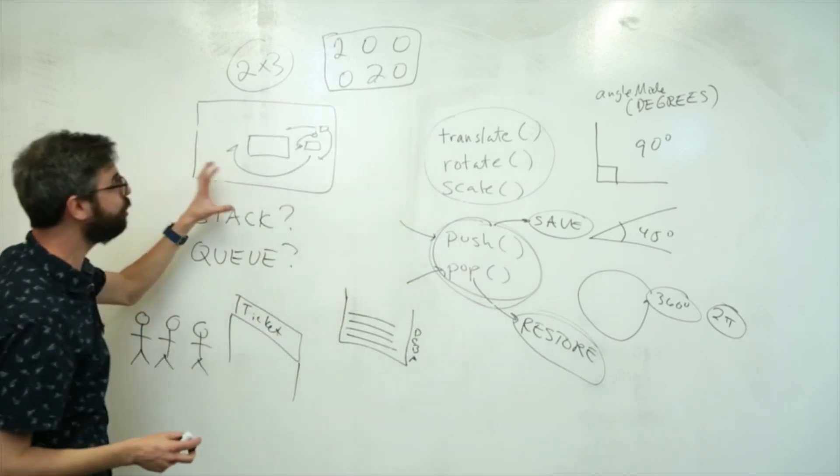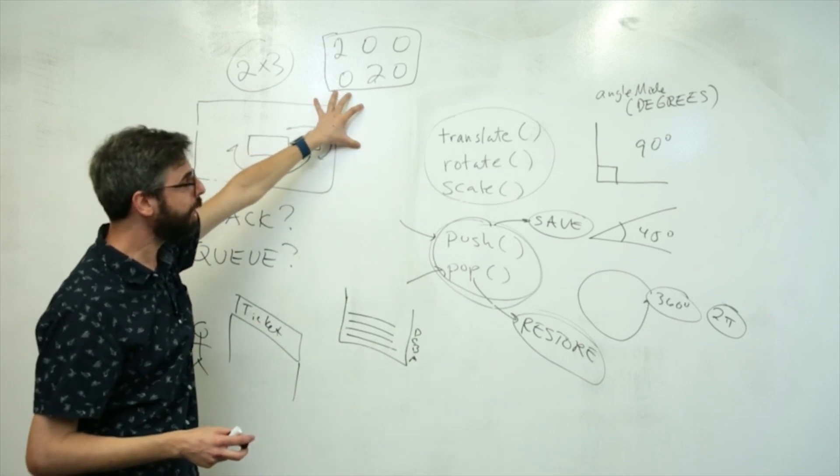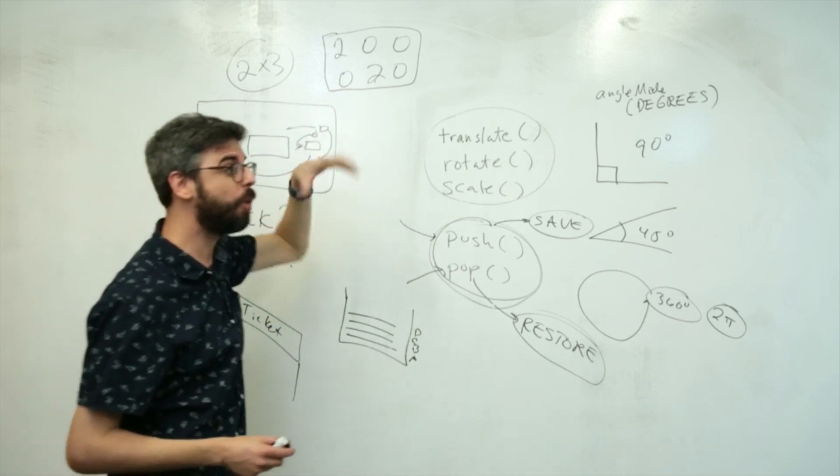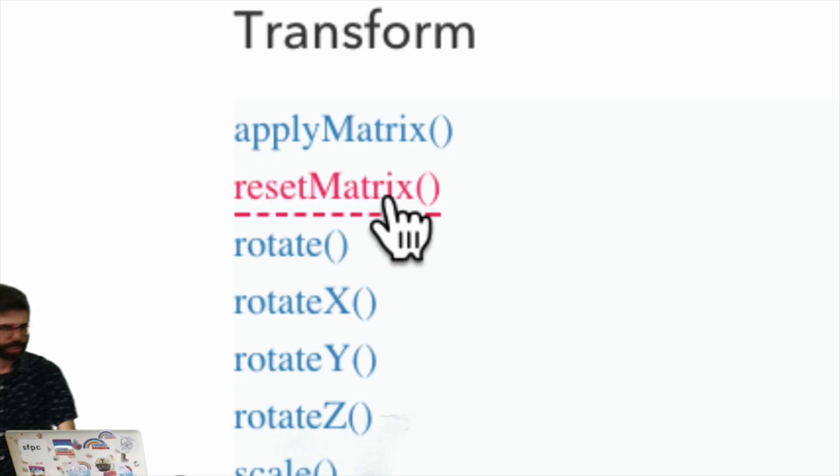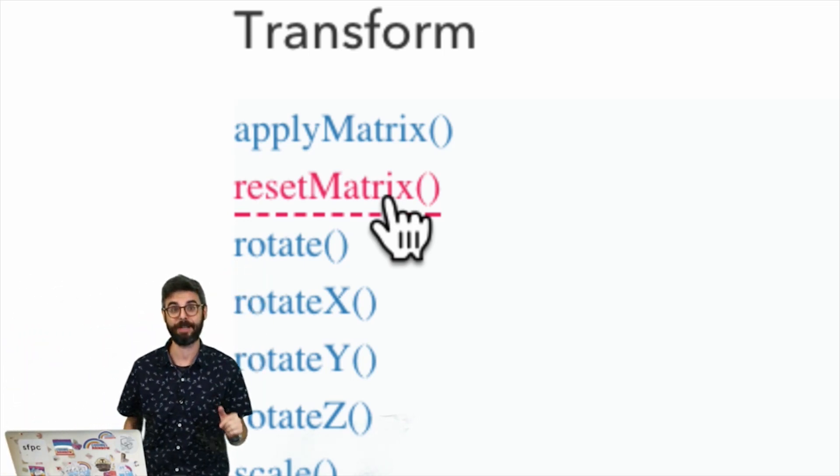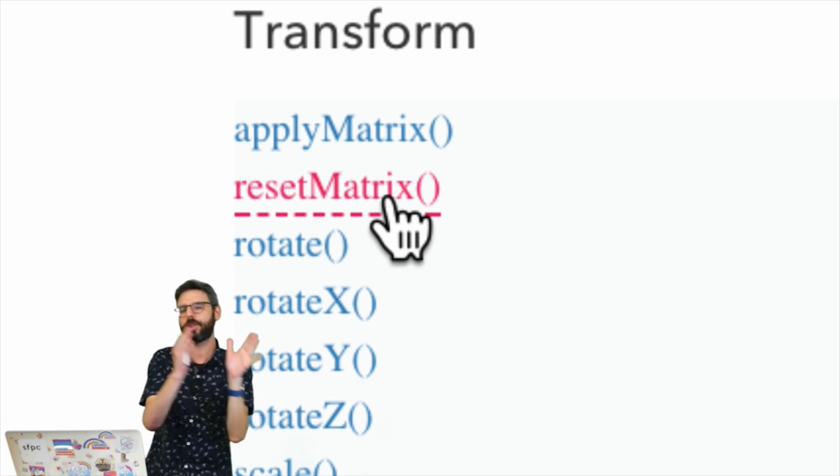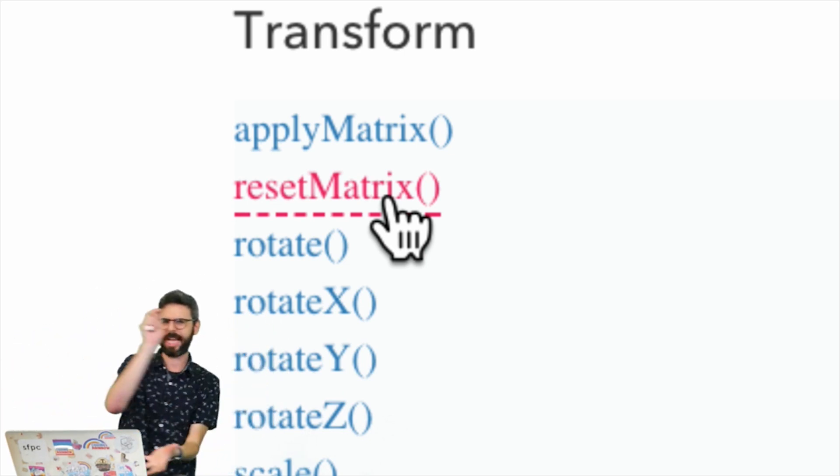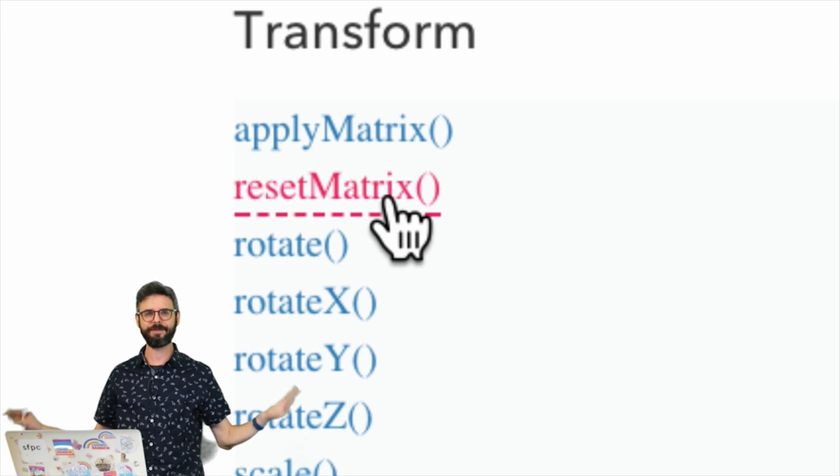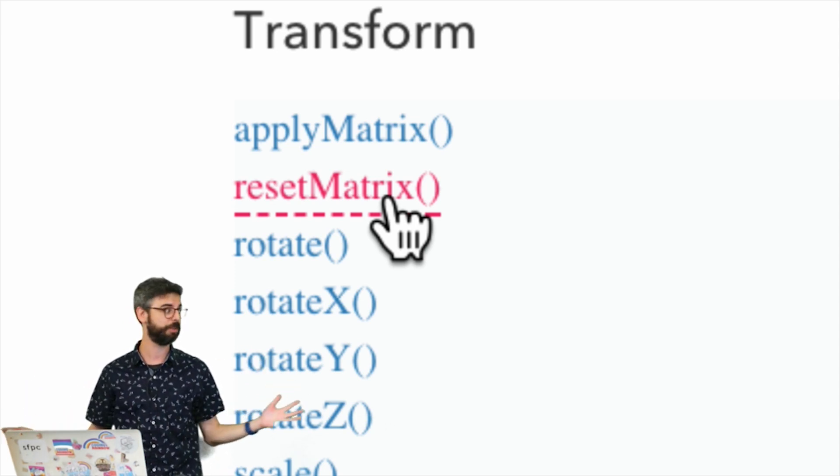But this is what's more important about it, is that as you do this, it's all stored in a matrix. So some things you can do is you can just actually call the reset matrix function. And reset is like just wipe everything. So push, push, push, pop, pop, pop is like save, save, save, restore, restore. But if you just want to reset back to the default state, you can just call reset matrix.